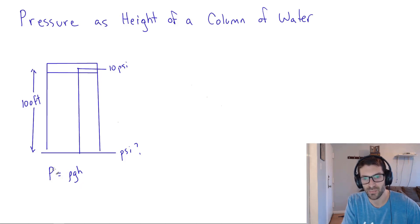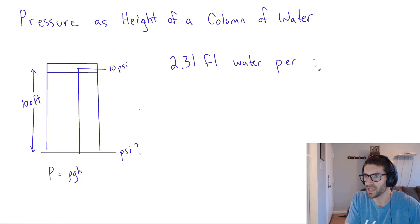And pressure becomes a function of height, which makes perfect sense, a bigger column, more pressure. And for liquid water, the conversion factor, the rule of thumb that we always come back to is 2.31 feet of water per psi. And that is a rule of thumb that I suggest you memorize.